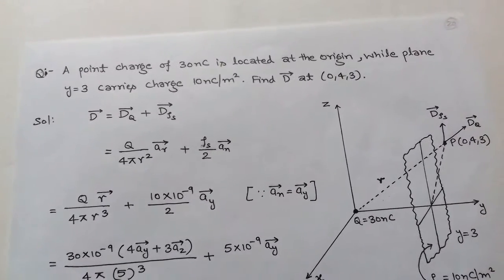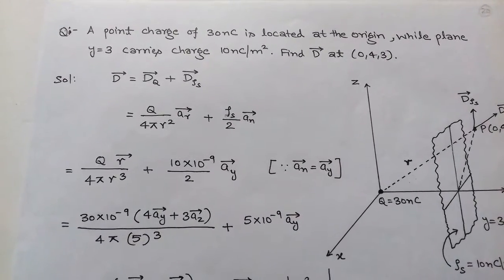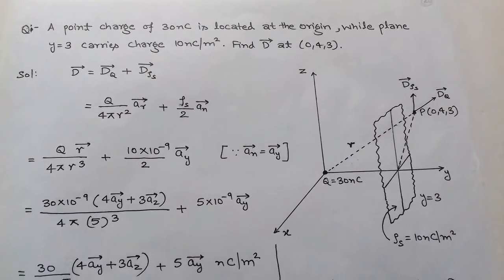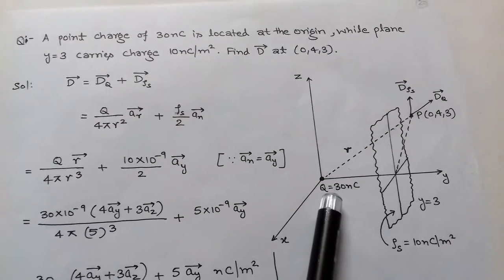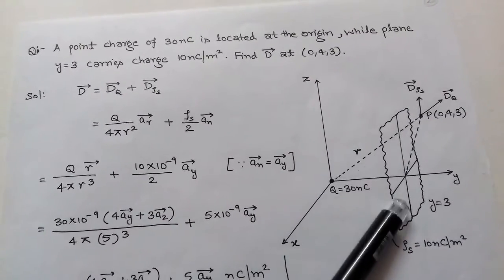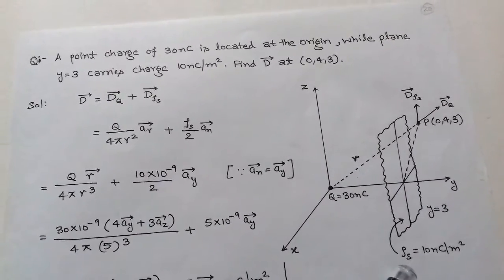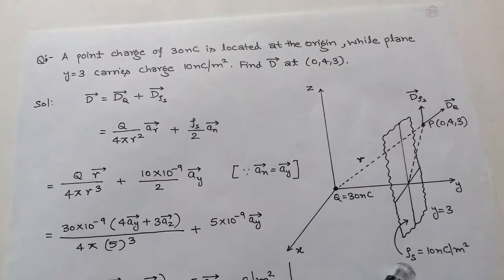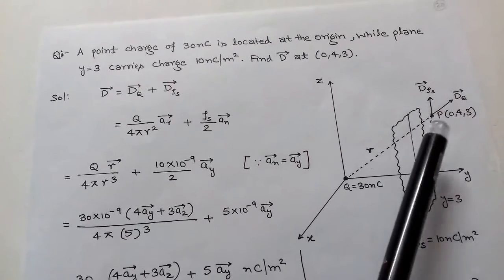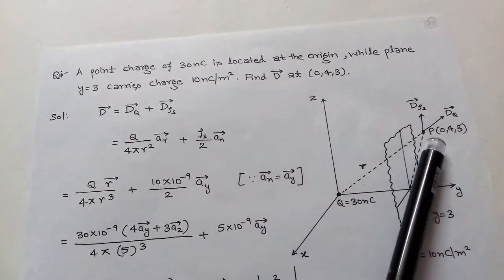Next question: A point charge of 30 nC is located at the origin, while the plane y = 3 carries a charge of 10 nC/m². Find electric flux density D at coordinate (0,4,3). There is a point charge 30 nC at the origin and a plane y = 3, which is parallel to the xz-plane, with surface charge density 10 nC/m². We determine D due to each source individually.